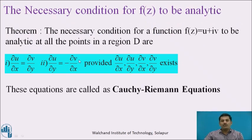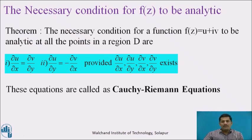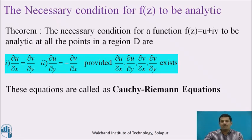We have discussed the definition of differentiability and analyticity. The analyticity of a function totally depends upon the derivative, and as we have seen, it is not an easy task to find out the derivative of a function at a given point. So to verify whether the given function is analytic at a point or in a region is also a difficult task. Here we are considering the necessary and sufficient condition for analyticity, by which our work to verify whether the function is analytic or not is somewhat easier.